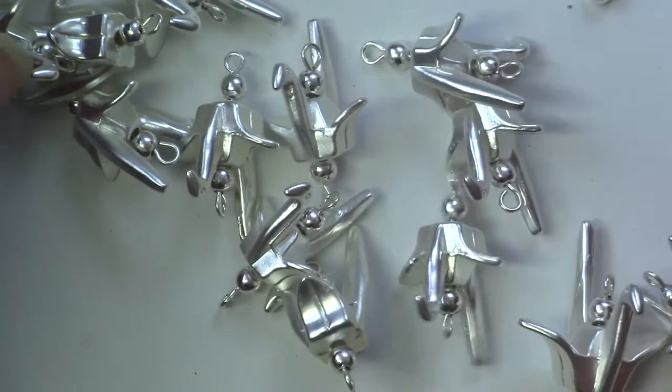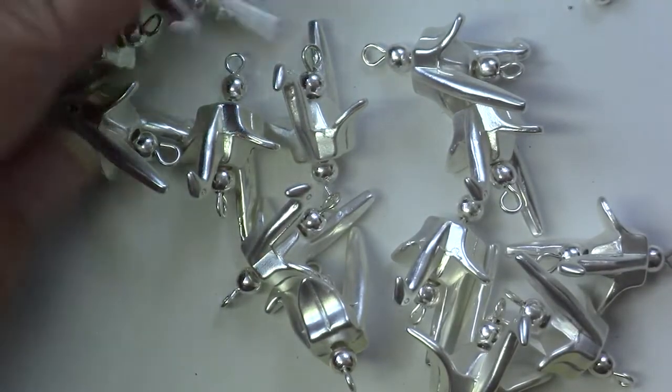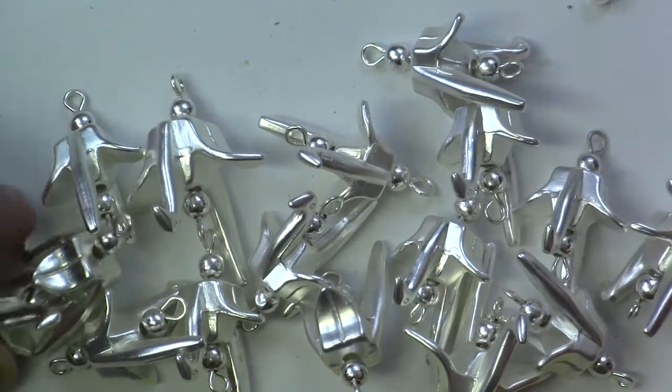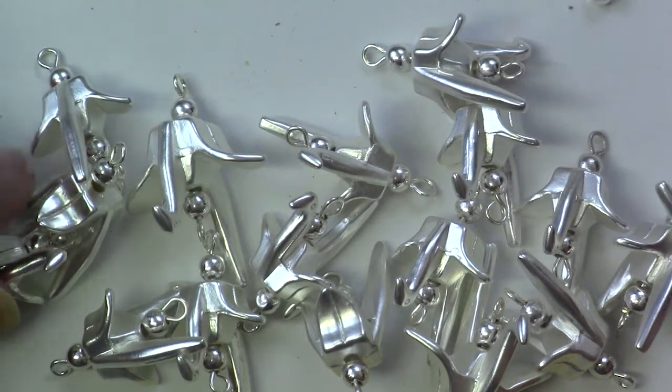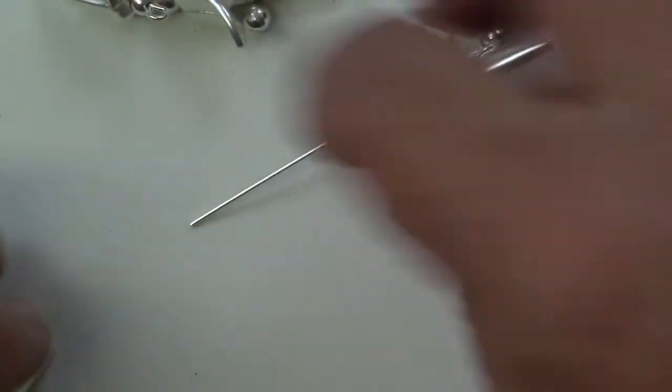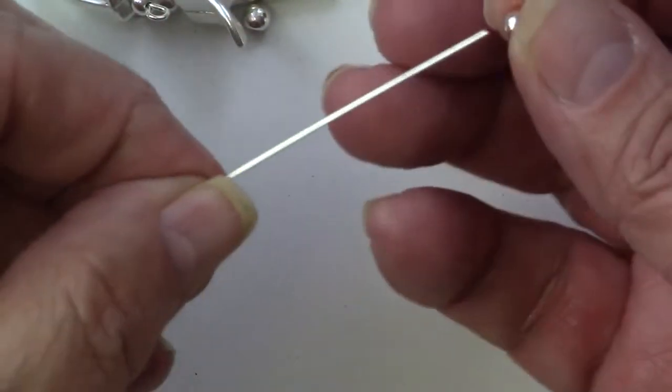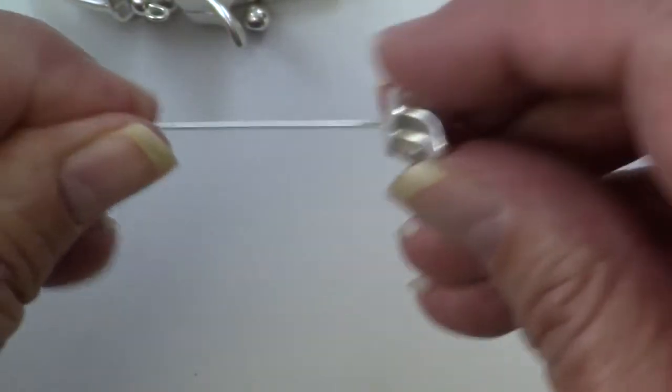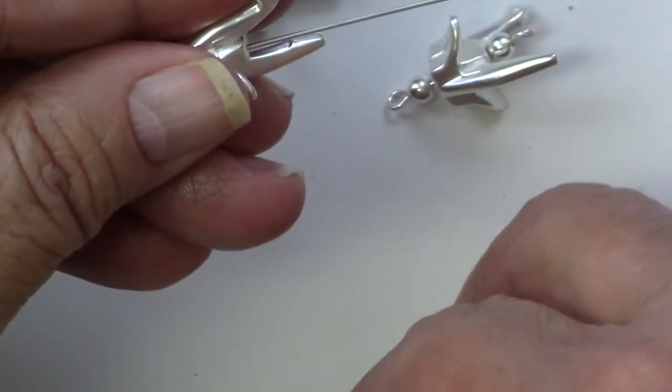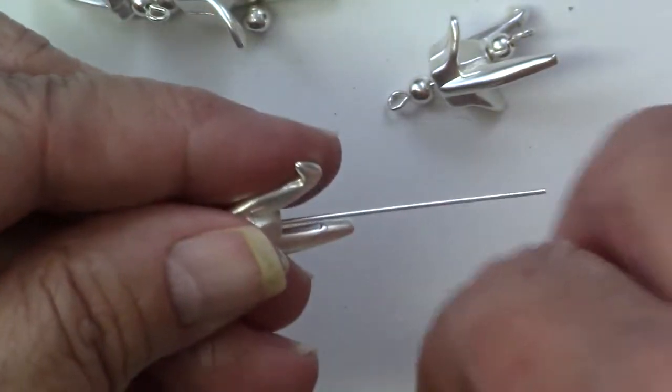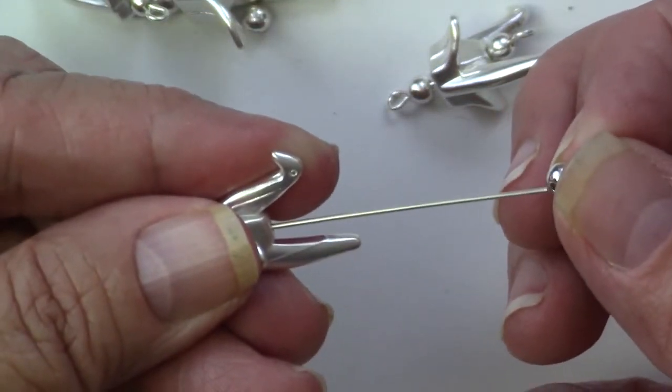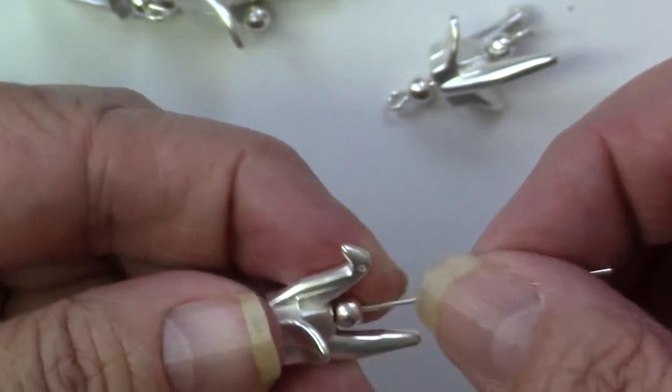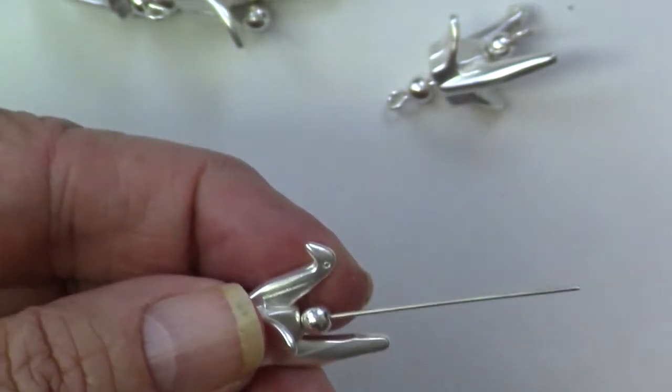The first thing that we're going to do is actually make some little connecting sections here. I have an eye pin and I strung a four millimeter silver bead and then the silver crane and another bead. I'll leave about three quarters of an inch and you'll notice that I marked my jewelry pliers earlier to fit the size of the eye pin.